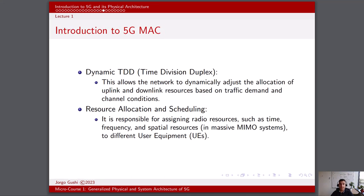The 5G medium access control layer is a critical component of wireless communication systems, including 5G. It plays a pivotal role in managing how multiple devices access and share the available communication resources. The MAC layer's primary responsibility is to control access to the physical transmission medium, ensuring efficient and fair resource allocation while minimizing collisions and contention. In the context of 5G, the MAC layer has undergone significant enhancements and innovations to support the diverse requirements of modern wireless networks. The 5G MAC layer includes important concepts like dynamic time division duplex, which allows the network to dynamically adjust the allocation of uplink and downlink resources based on traffic demand and channel conditions.